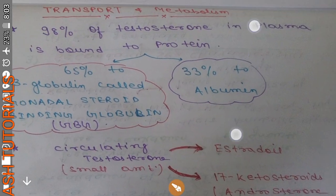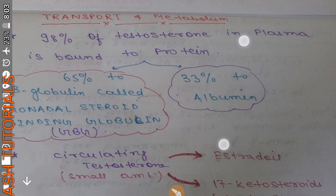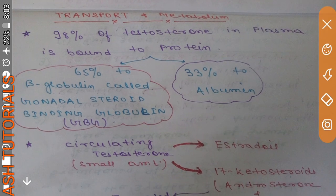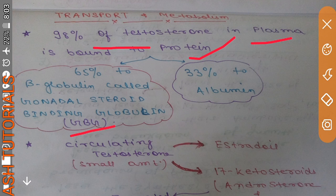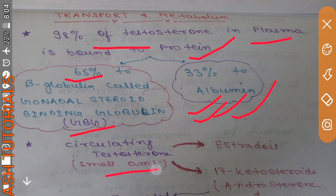Regarding transport and metabolism: 95 to 98 percent of testosterone in plasma is bound to protein. About 65 percent binds to SHBG — sex hormone-binding globulin (also called gonadal steroid-binding globulin) — and the remaining 33 percent binds to albumin.